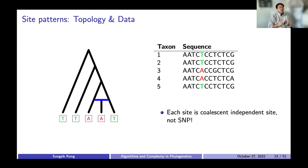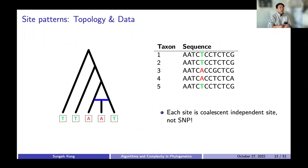We can do the same thing for the fifth column, for example, and we will get a site pattern of T, T, A, A, A, T, which tells us a bit more story — because species three and four share the same nucleotide that is different from everybody else. One thing to remember is that each of these sites is called coalescent independent sites. Even if they might look similar, they are different from SNP data, because coalescent independent sites also consider the sites where there is no variation, as we see in site one.